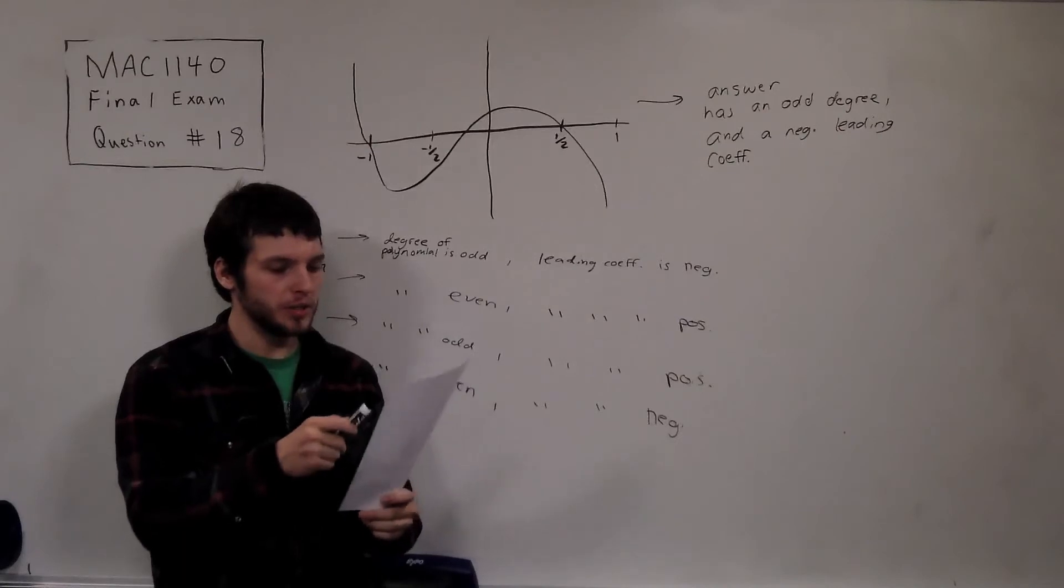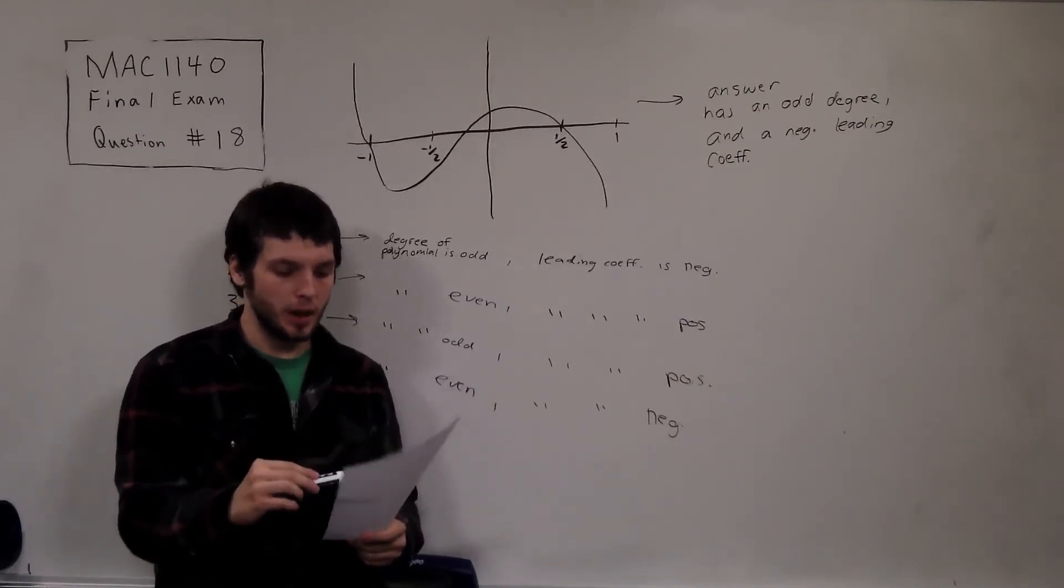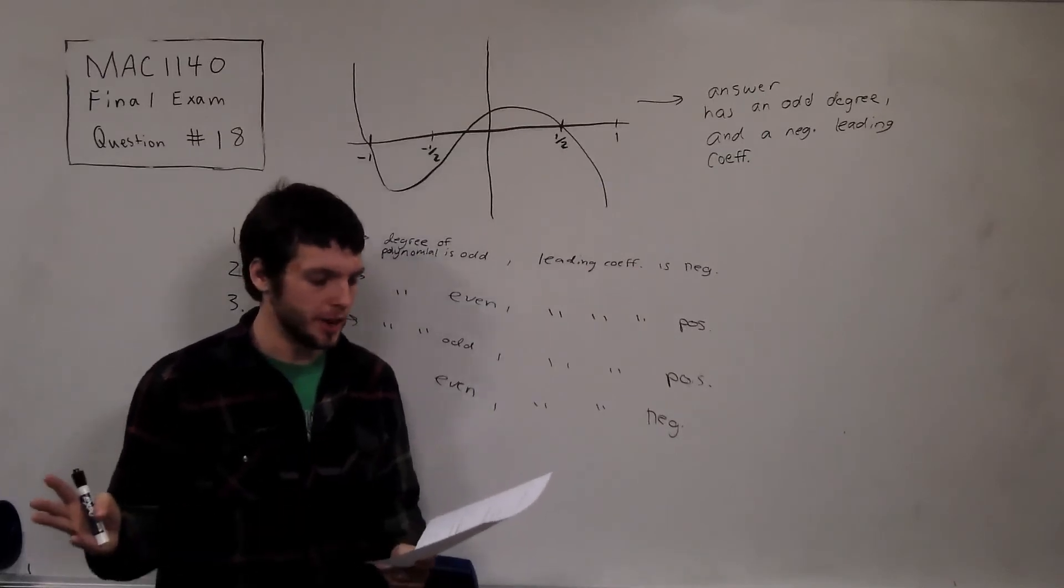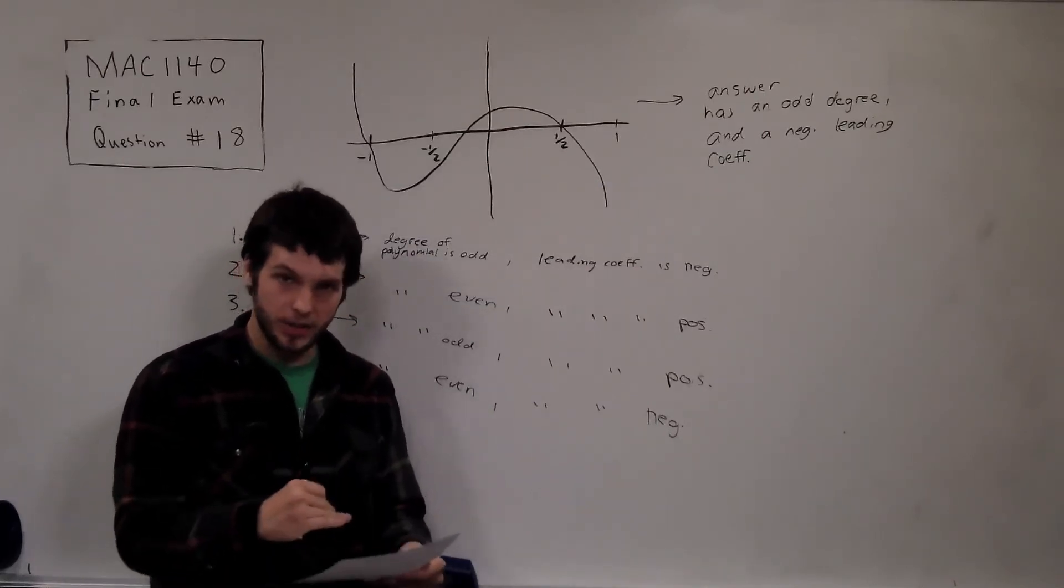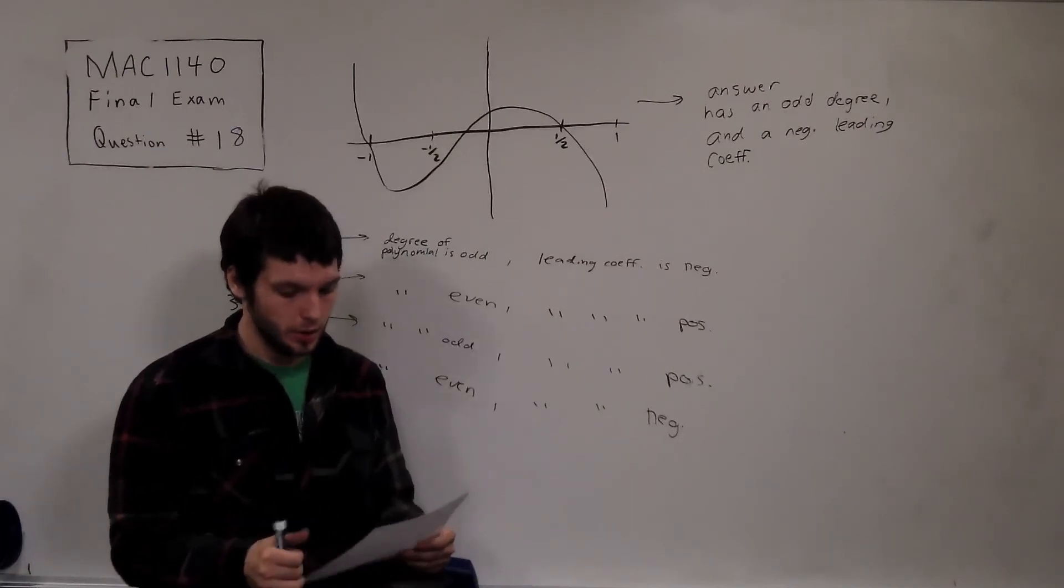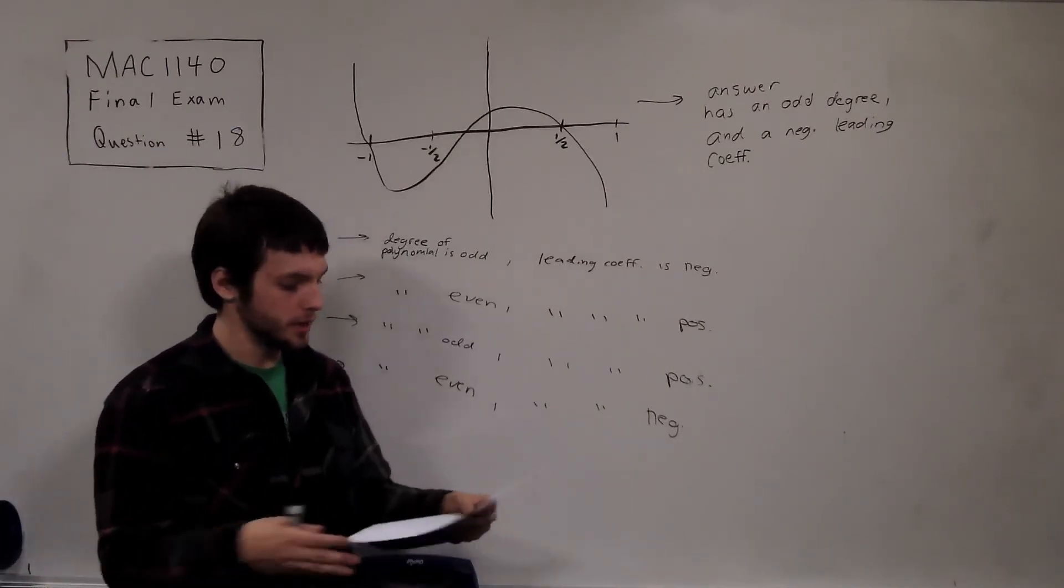We see that for choices B and D, the degree of the polynomial is 20. So, 20 is even. That means B and D are out. So, we have A and C. A and C, they each have degree 19. So, those are both odds. So, yeah, those are both candidates.